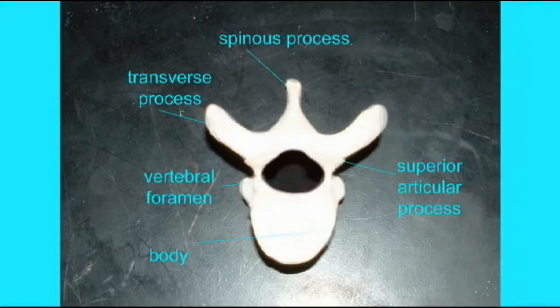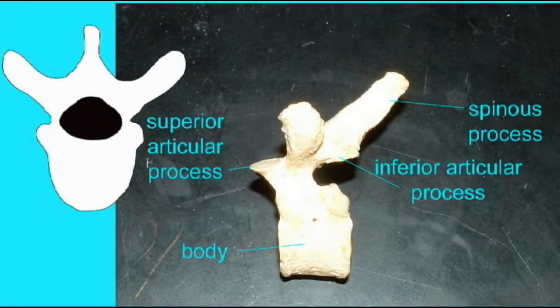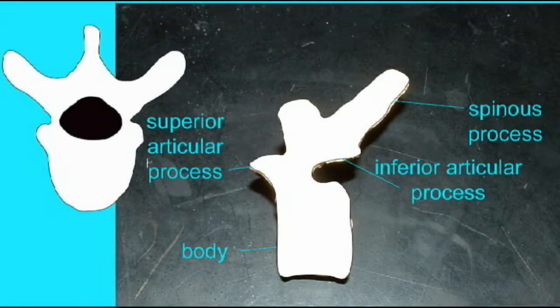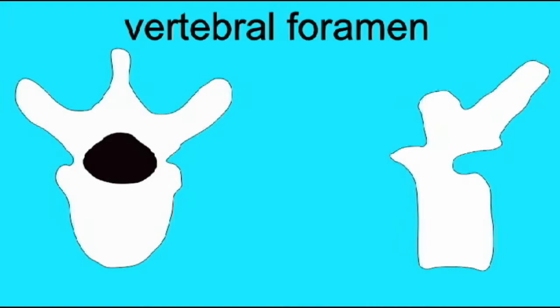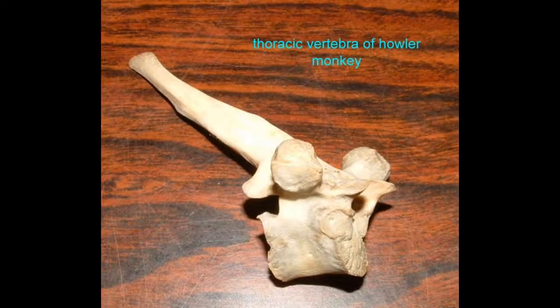The spinous process attaches muscles which can move the arm and neck, and therefore different lineages have modified the size of this process.